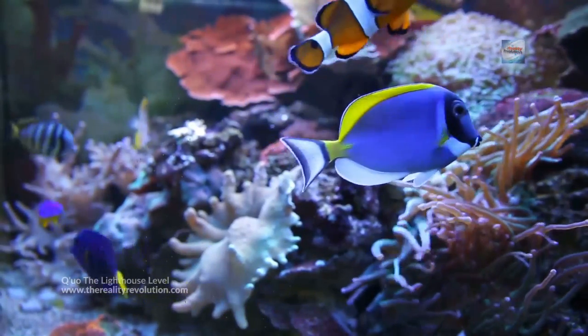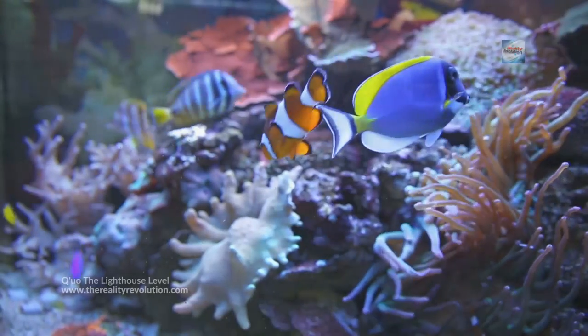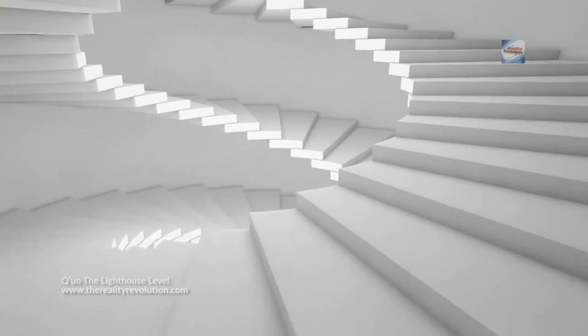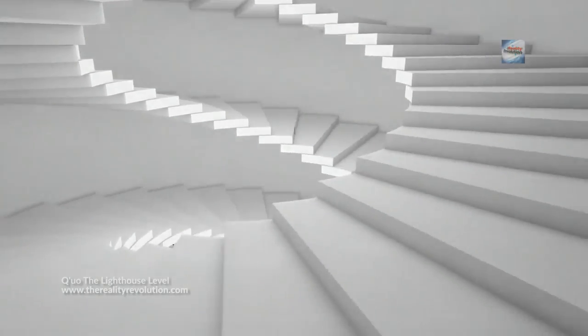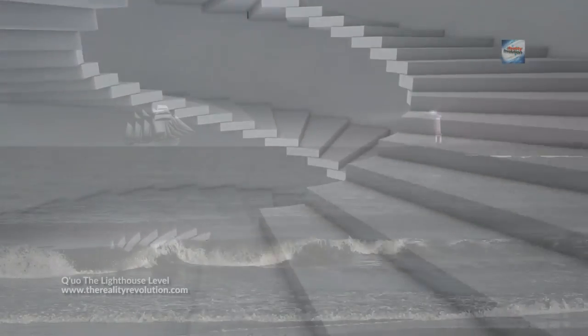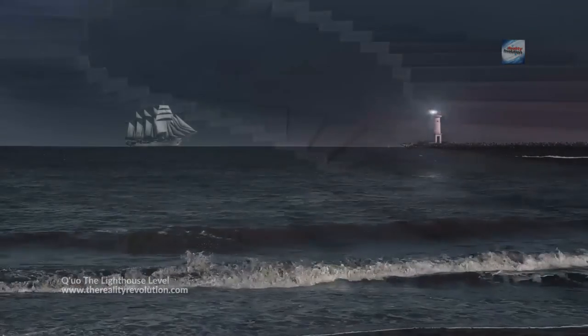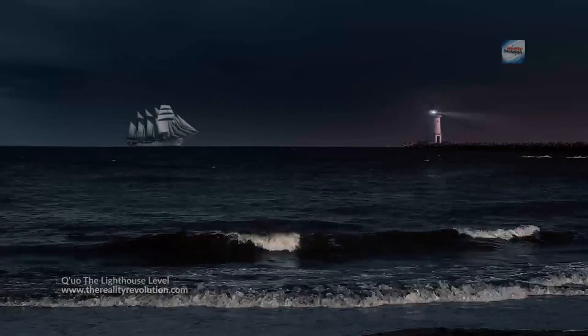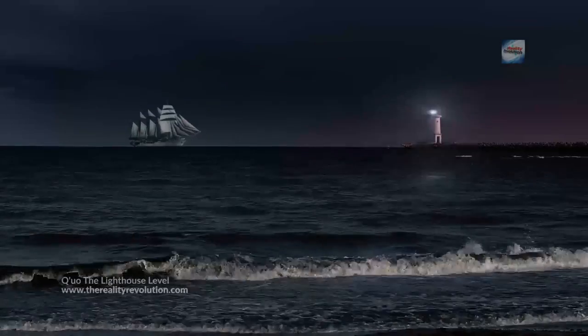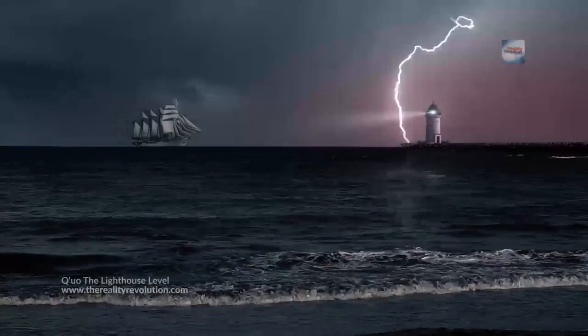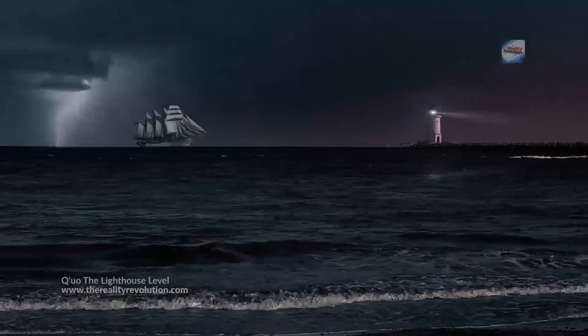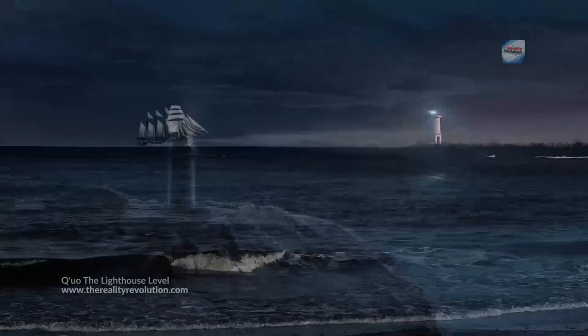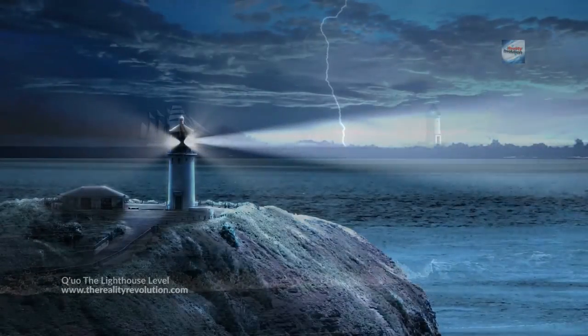The indigo ray is described by the Confederation as having a three-petaled or triangular shape. For most people, the Raw group notes that some adepts who have balanced the lower energies may create more faceted forms. Once we players have become skillful at keeping our hearts open, we will find it very helpful to move into this indigo ray and to do the work in consciousness that this human interface device makes possible.